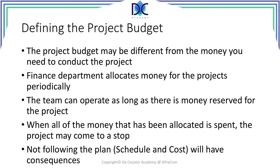What is the project budget? The project budget may be different from the money you need to conduct the project — it contains more elements. It's not just the cost to do the work. Your financial department will allocate money to projects on a periodical basis. Every period, typically one month or three months depending on the cost control that the company is using, you will get a reserved amount of money to do the work.